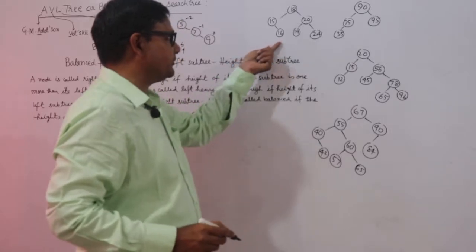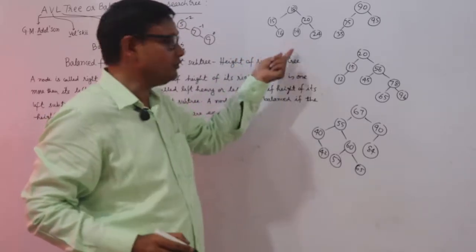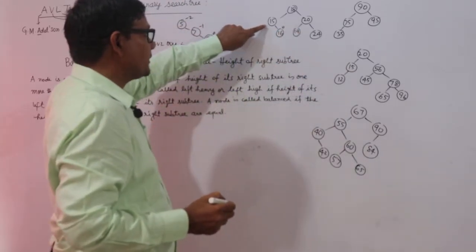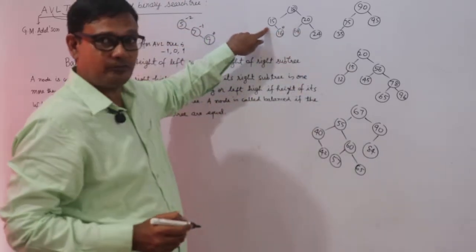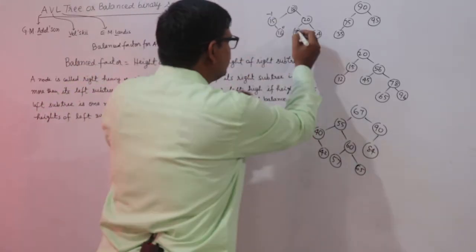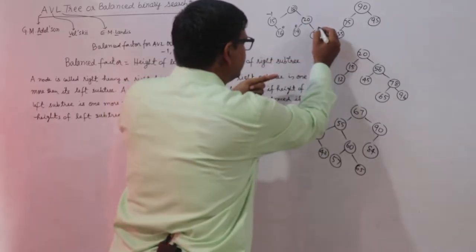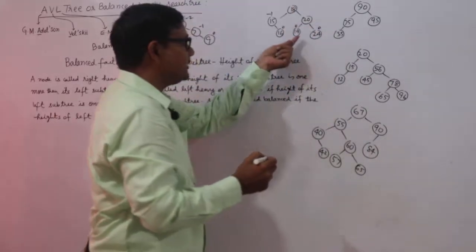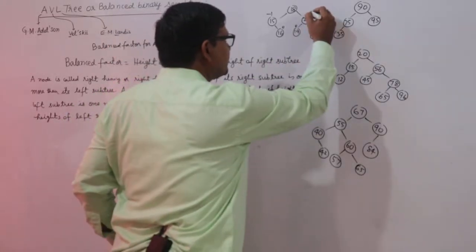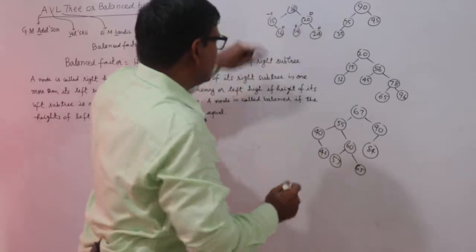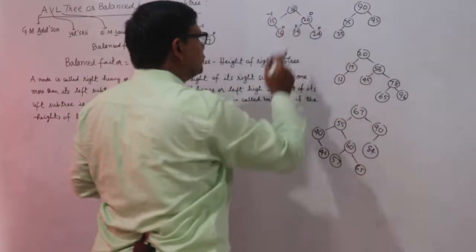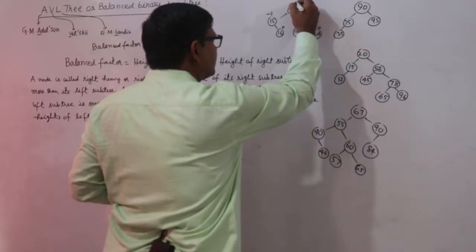I will check Balance Factor here. Its left subtree and right subtree heights are 0, so its Balance Factor is 0. For the next node, height of left subtree is 0, so 0 minus 1 gives minus 1. Another node has Balance Factor 0, and another has Balance Factor 0. Here, height of left subtree is 1 and height of right subtree is also 1, so 1 minus 1 equals 0. For the root, left subtree height 2 minus right subtree height 2 equals 0.